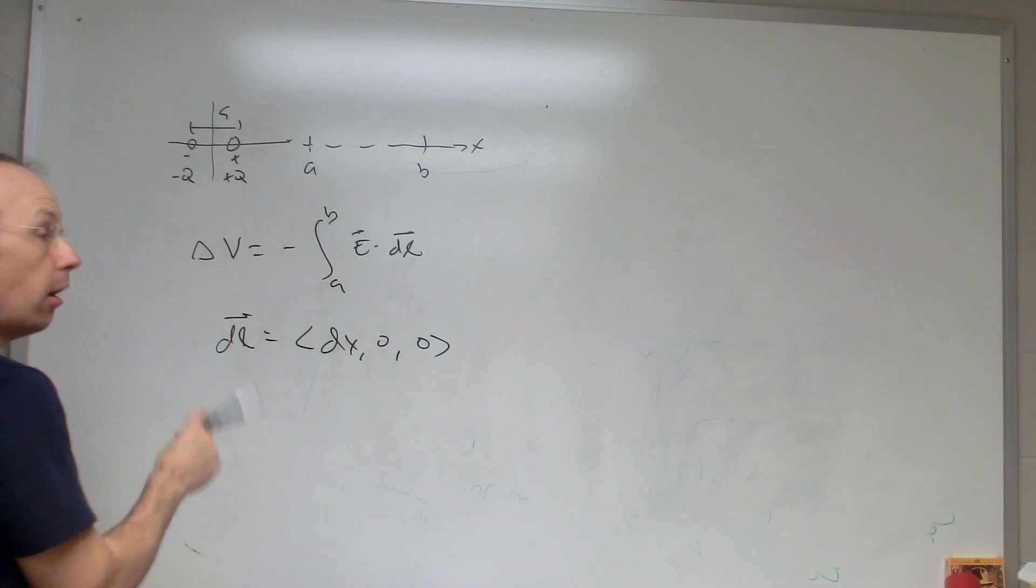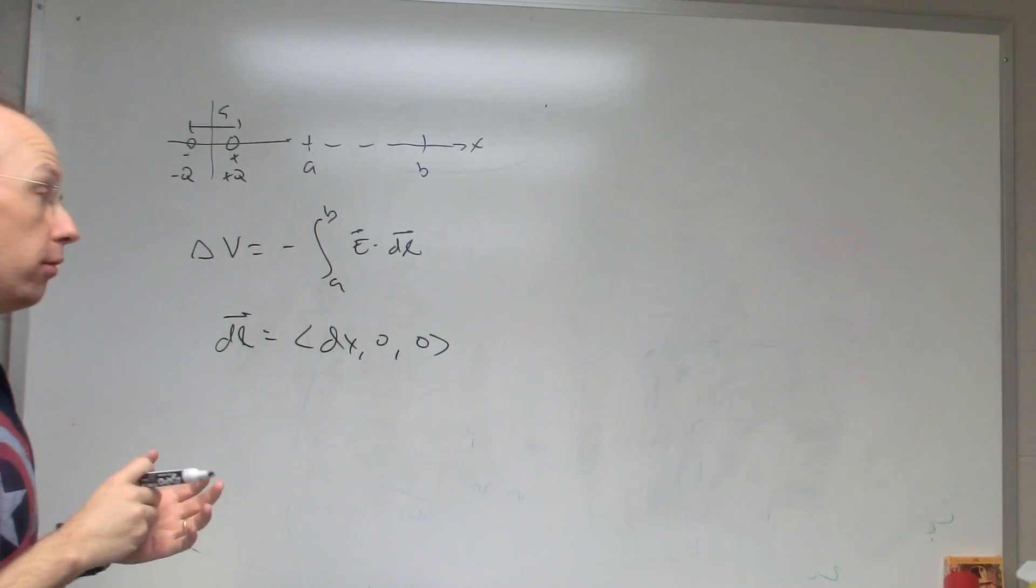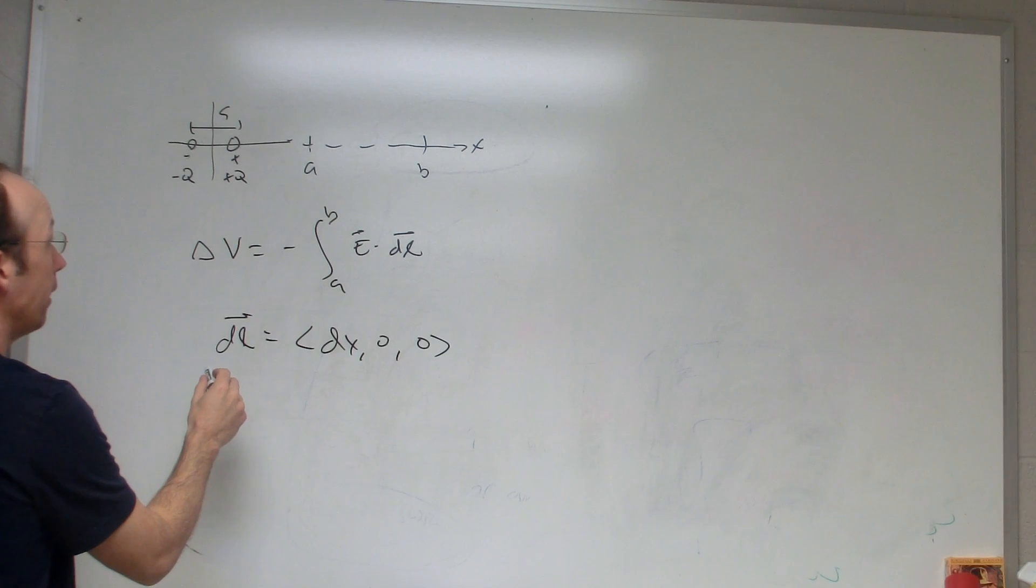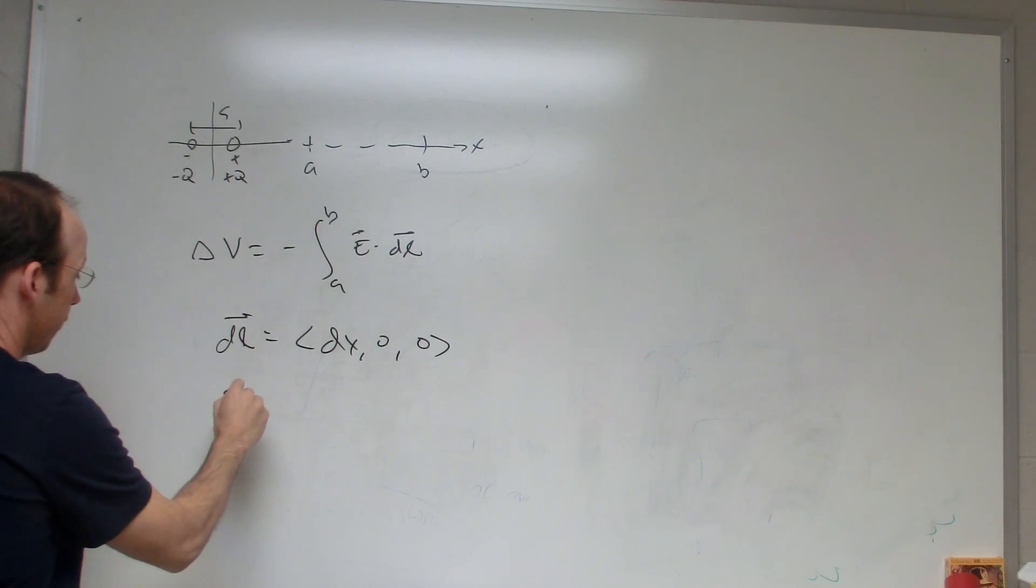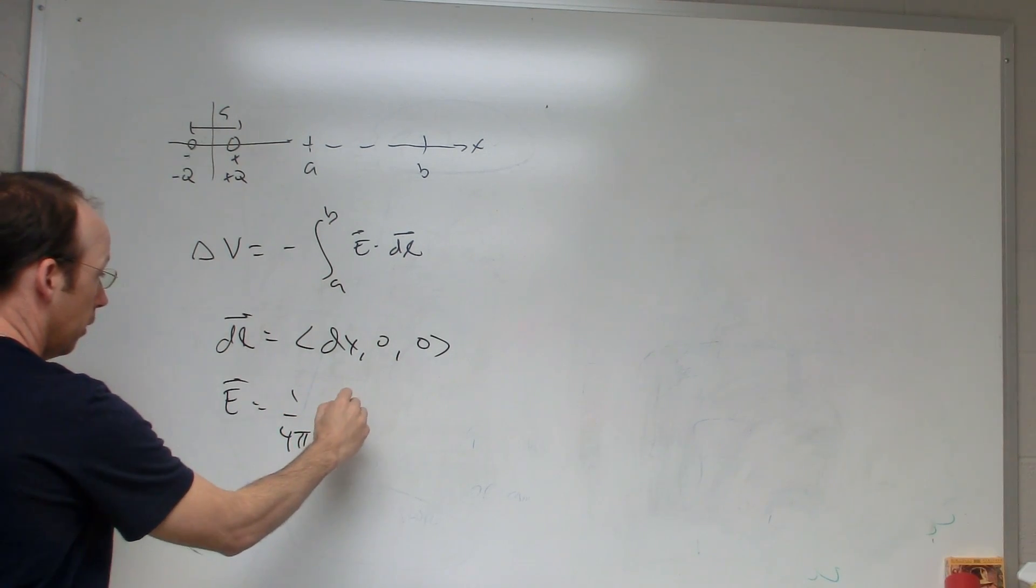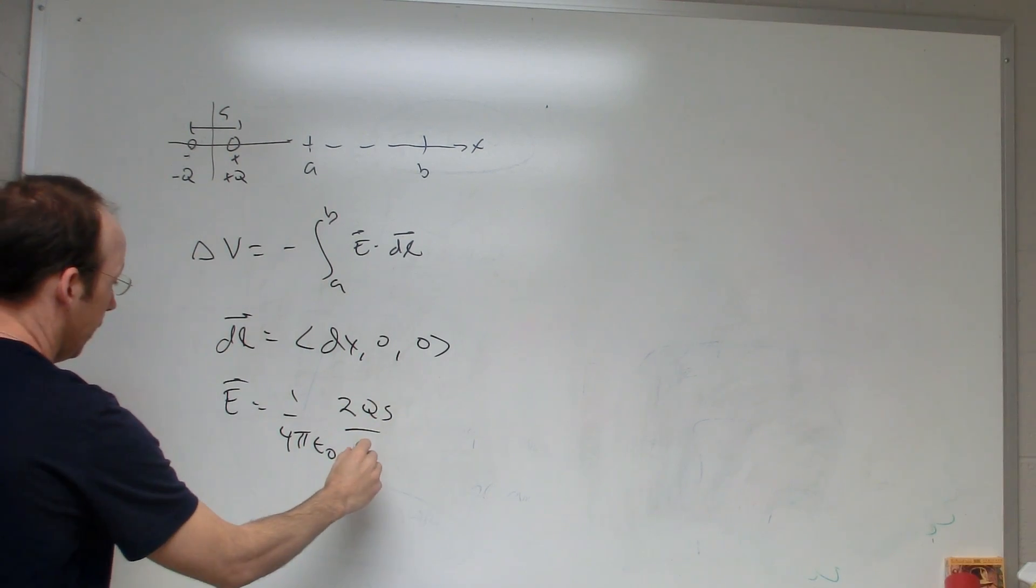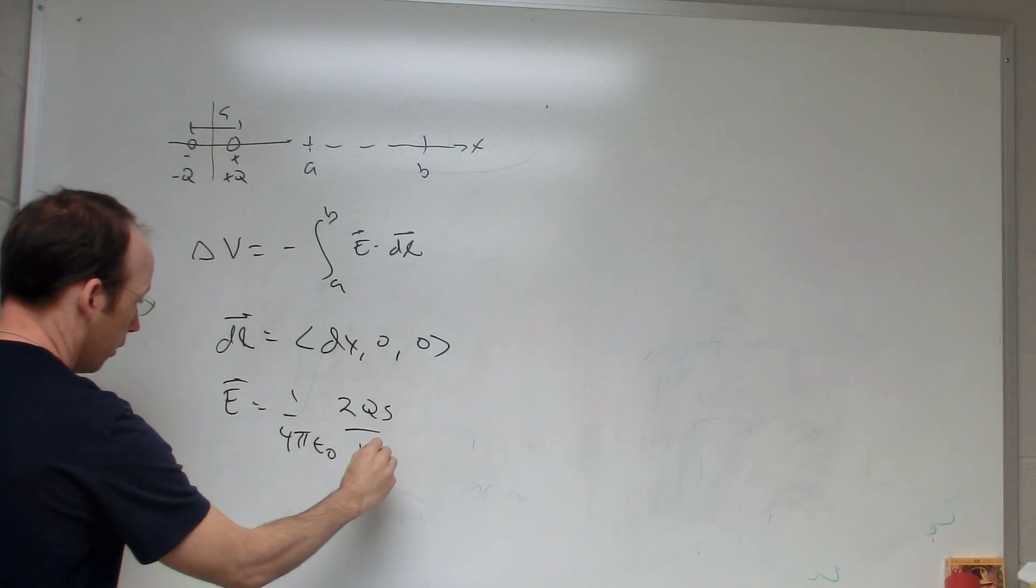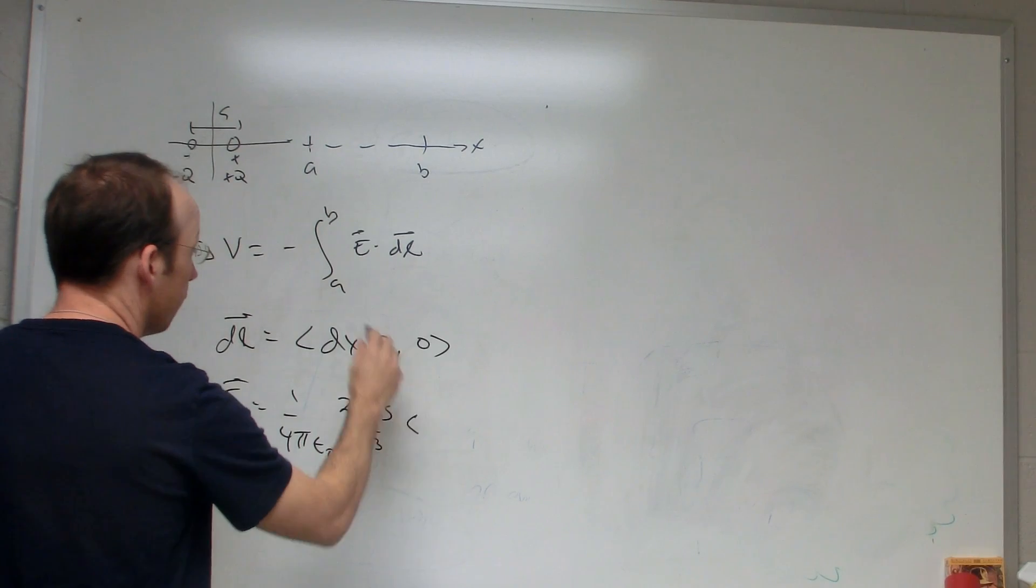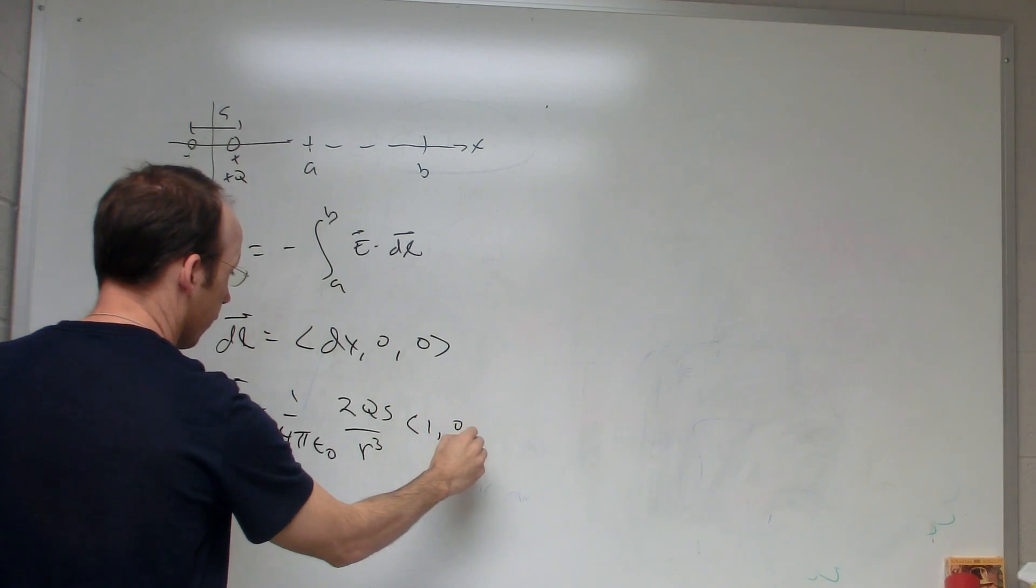And the electric field also, I know the electric field due to a dipole. I know that I could write it like this: 1 over 4 pi epsilon 0, 2 Qs over, let's say, I'll say r cubed, and then this is going to be in the x direction, so 1, 0, 0.